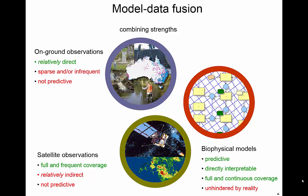In this diagram, I've listed some of the strengths and weaknesses of different data types — of models and data. We could potentially try to predict the world using only a model and no data. The benefit of biophysical models is they're predictive, so we can predict the future. We've conceptualized them ourselves so we can interpret what they do, and we can give them full and continuous coverage — they can predict anything under any circumstance. The problem is that if we apply them without any constraining data, they'll be completely unhindered by reality, probably much like these spherical cows, but in unhelpful ways. They won't tell us what we need to know about reality.